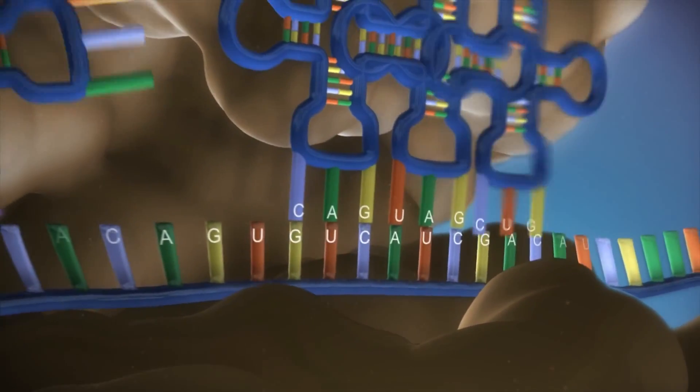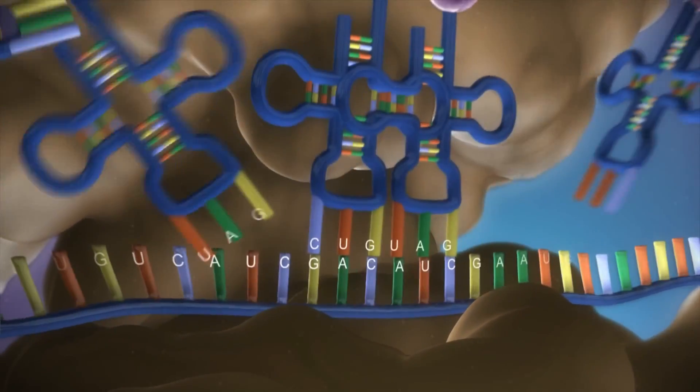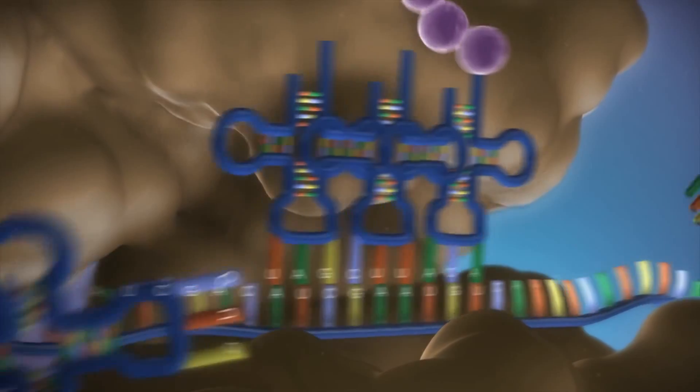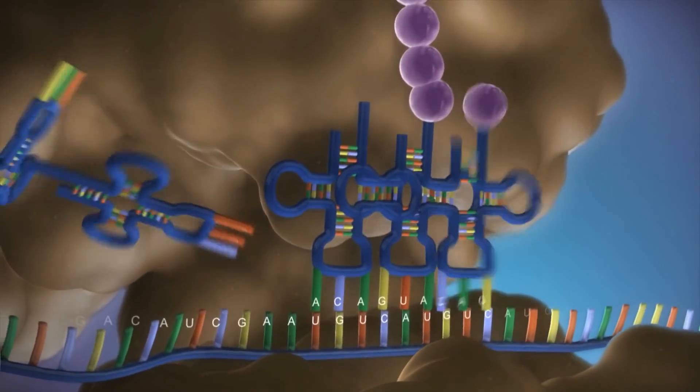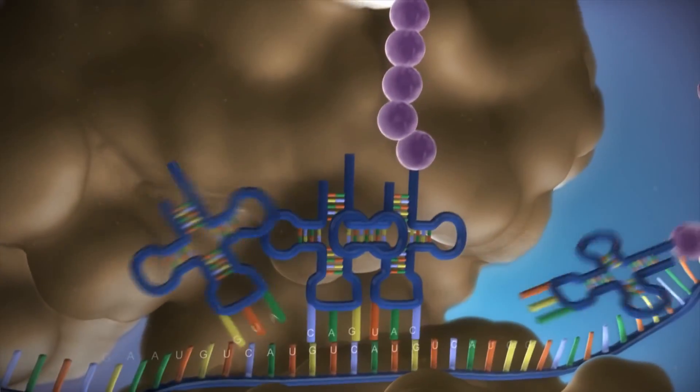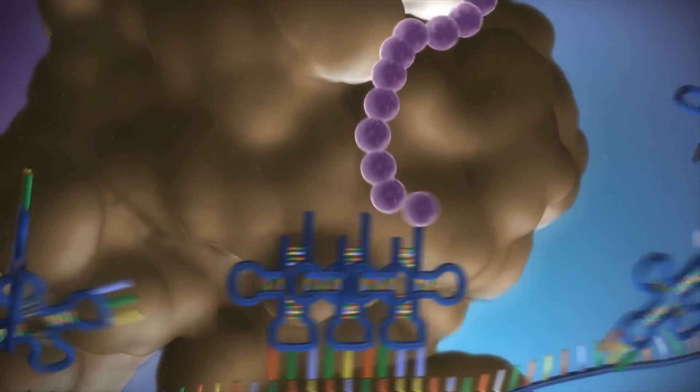The messenger RNA is read three bases at a time. As each triplet is read, a transfer RNA delivers the corresponding amino acid. This is added to a growing chain of amino acids.